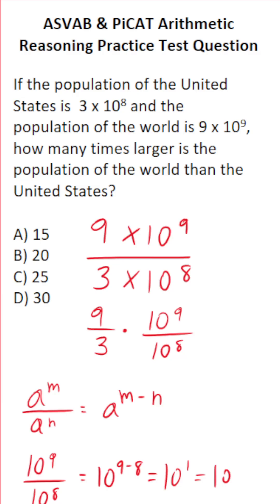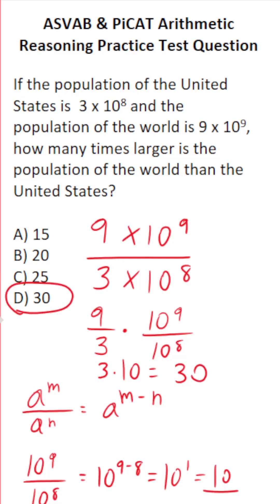So what does this become? This becomes 9 over 3 — what is 9 over 3? 9 divided by 3 is 3. And 10 to the 9th over 10 to the 8th we just figured out is 10. So this is 3 times 10, which is 30. The population of the world is 30 times larger than the population of the United States.